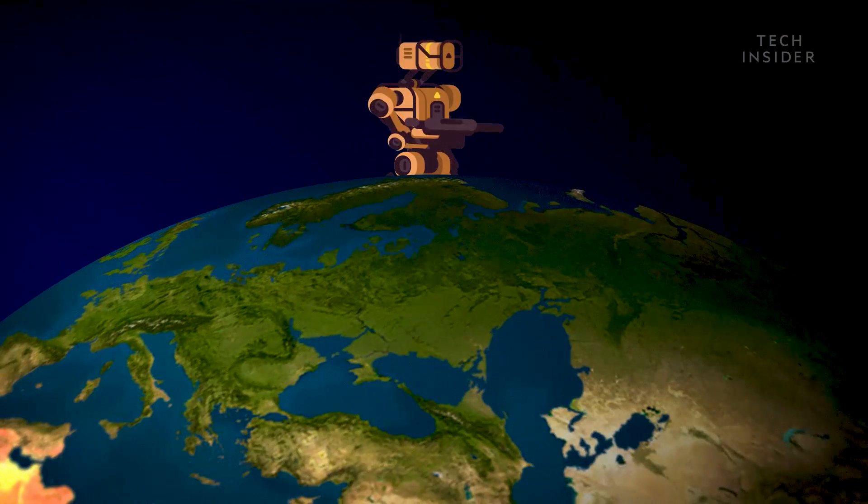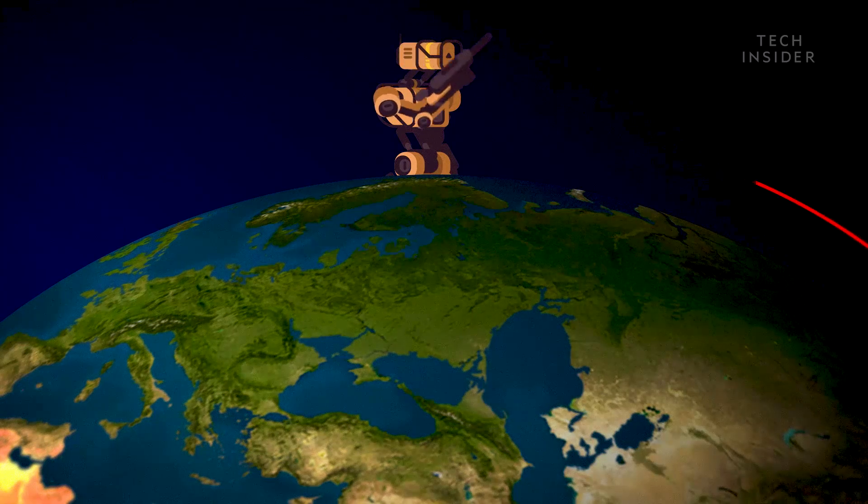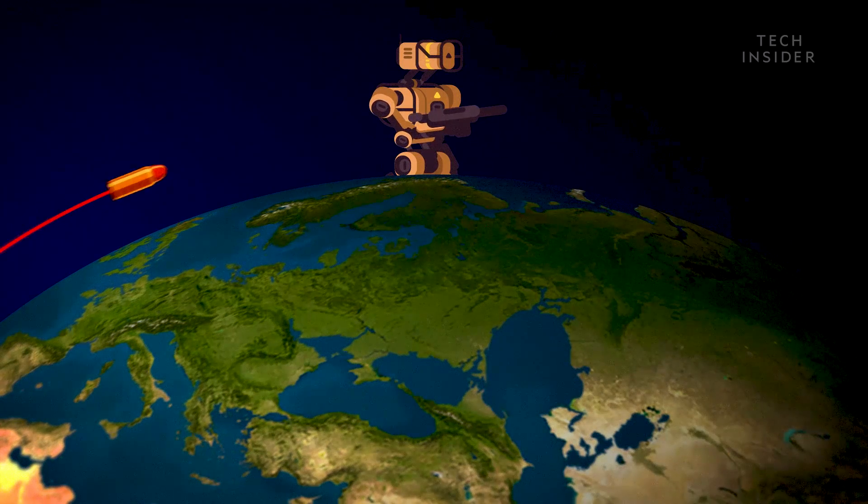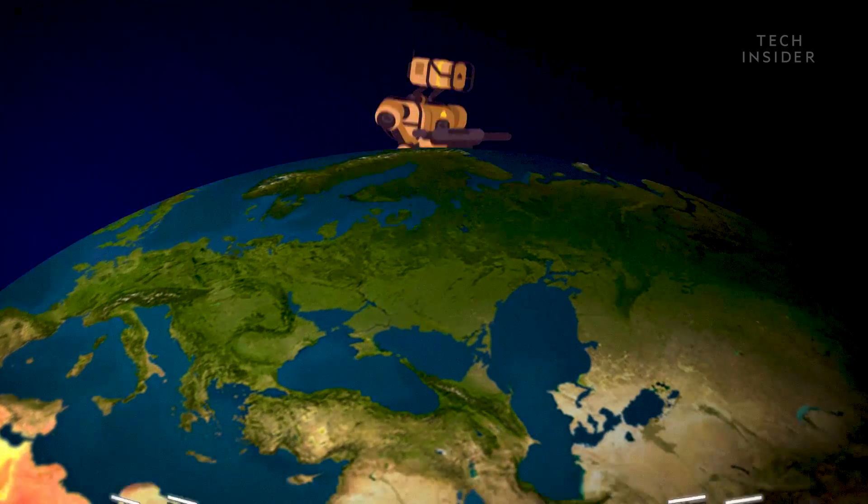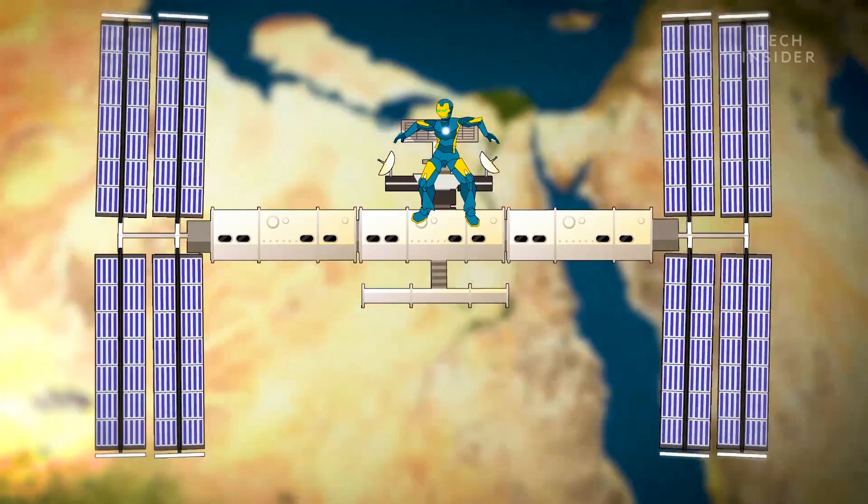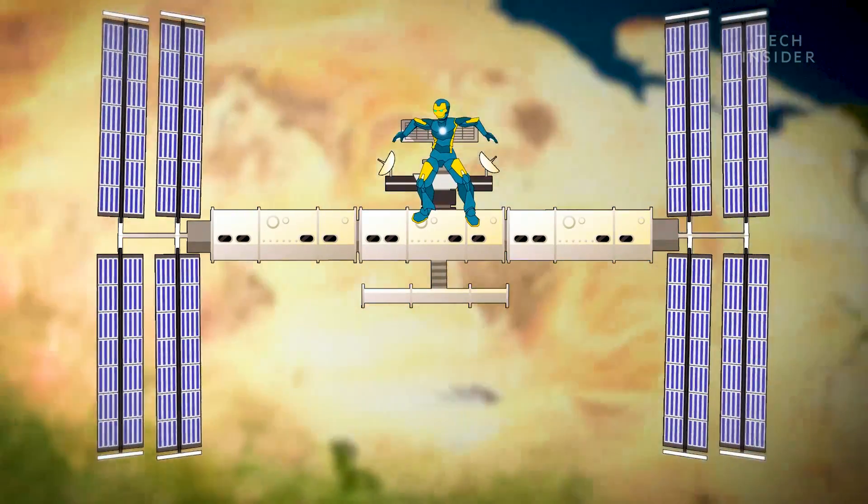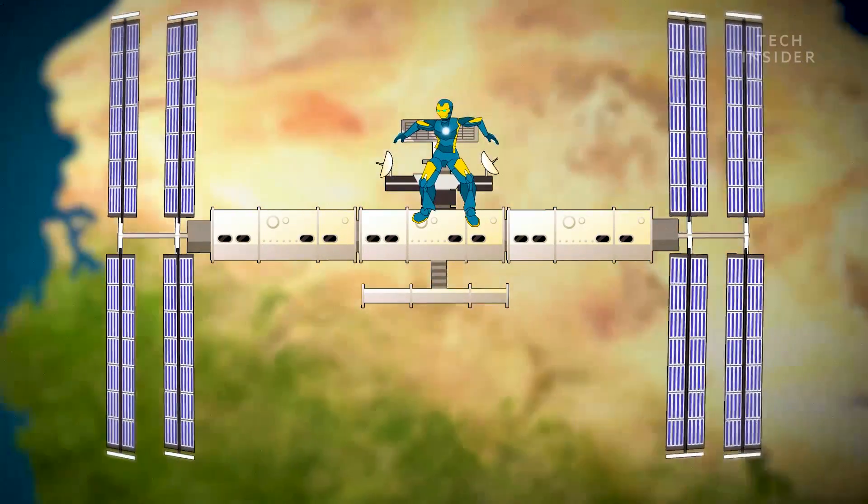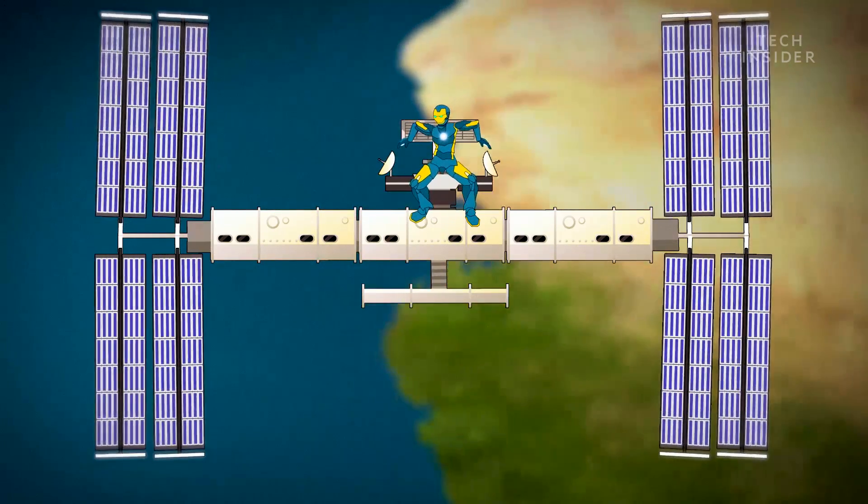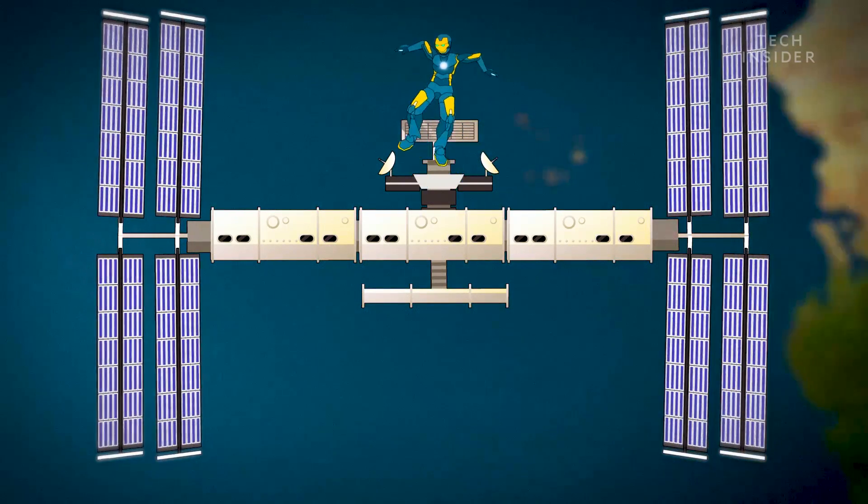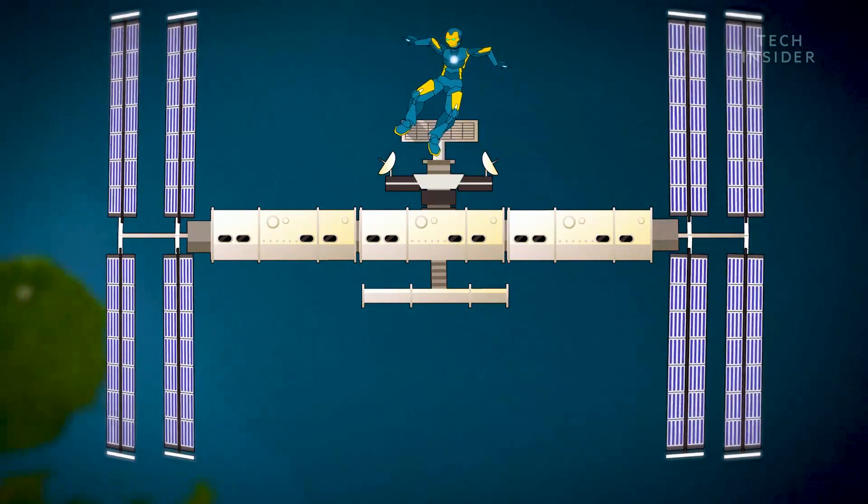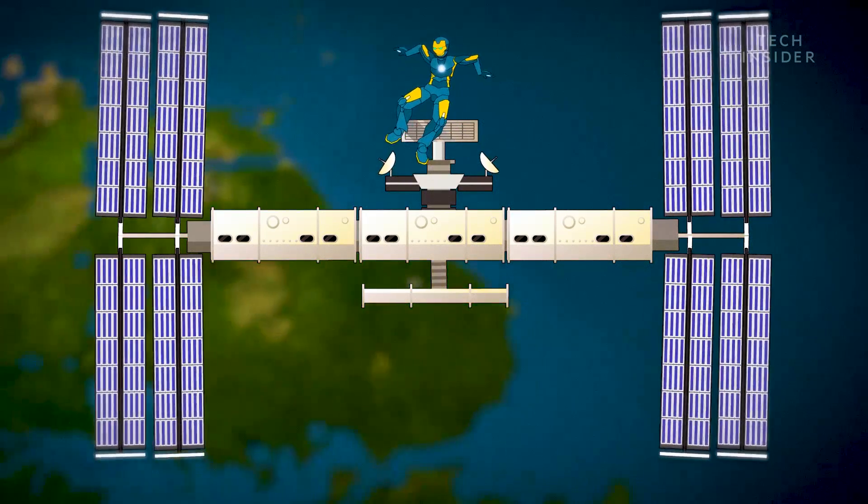If you shot anything at that speed on Earth, by the time it was about to hit the ground, it would miss. In the same way, the ISS isn't floating in space, it's falling towards Earth and missing. And when you jump off the ISS, you're initially moving at the same speed. So you end up in orbit too, at least for a while.